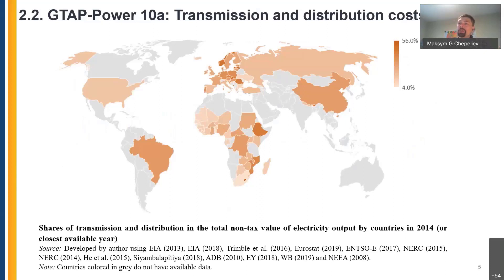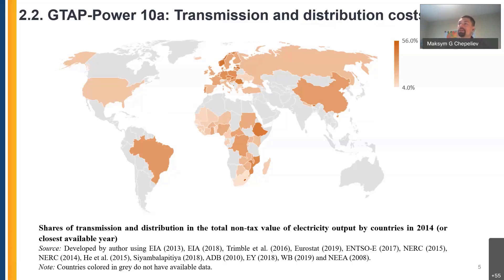Transmission and distribution shares vary dramatically across countries, from 4% in Seychelles to 56% in Lesotho, with a global average of around 25%. Even within Europe, shares range from 11% in Bulgaria to over 50% in Slovakia, reflecting different electricity market structures, grid systems, population density, and pricing approaches. Country- and year-specific data, especially for EU countries, has been implemented in the database.